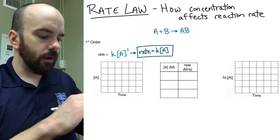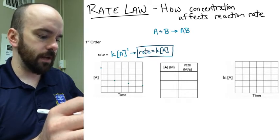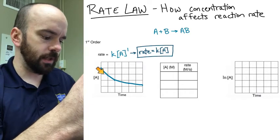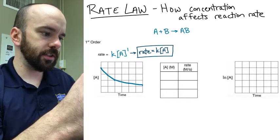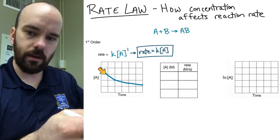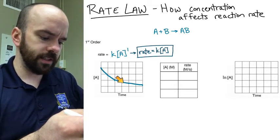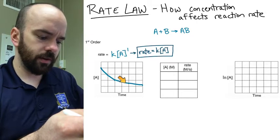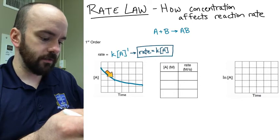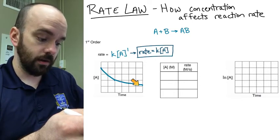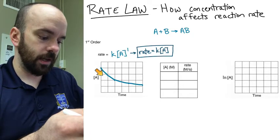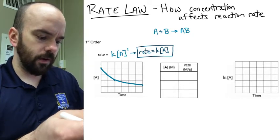Looking at the graph of concentration versus time for first order, you'll see a steep decline at first because when you have more concentration, there's more that it can decrease by per second. But as concentration gets lower, it doesn't decrease by as much. So the graph will look like a curve — not linear. The change is greater at the beginning when you have more concentration.